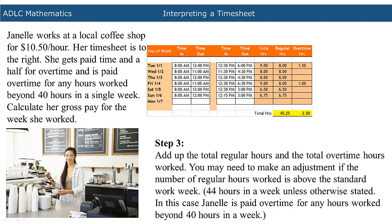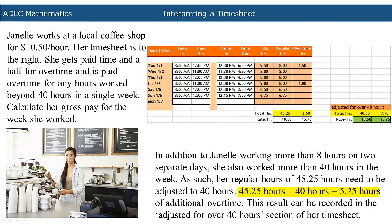Next, the total number of hours as well as the total number of overtime hours need to be added together. Unless otherwise stated, a regular work week is 44 hours. Janelle is paid for any time worked past 40 hours. In addition to Janelle working more than 8 hours on two separate days, she also worked more than 40 hours in the week.